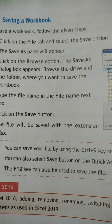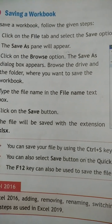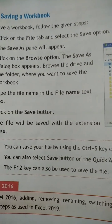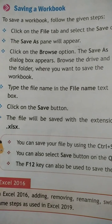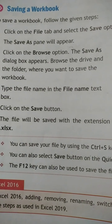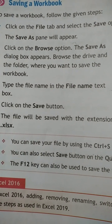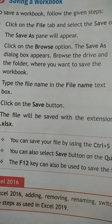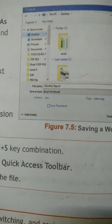After clicking the File tab, select the Save option. Then select Save As — the Save As pane will appear. Click on the Browse option and the Save As dialog box appears.